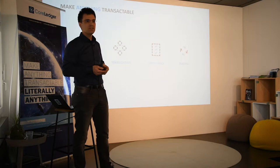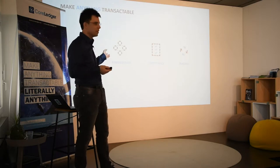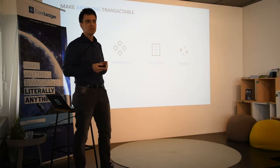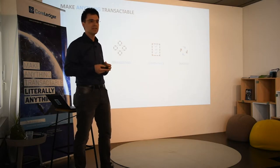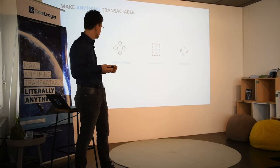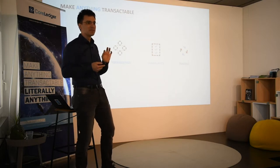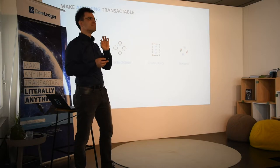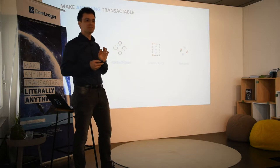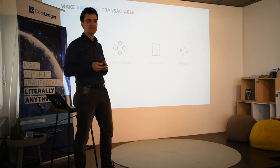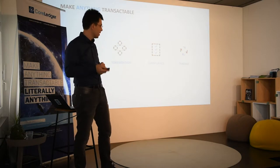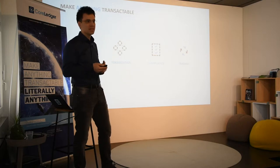The first pillar is documentation — very important, you want to know what you get. Then tokenization; for most people a no-brainer, but we put a lot of added value in there. It's not just running a smart contract, it's more. Compliance is becoming even more pressing since the new FATF rules have been published. And then of course the trading.